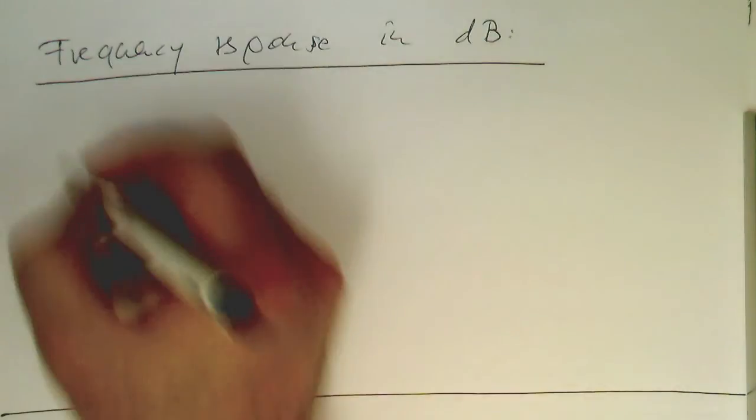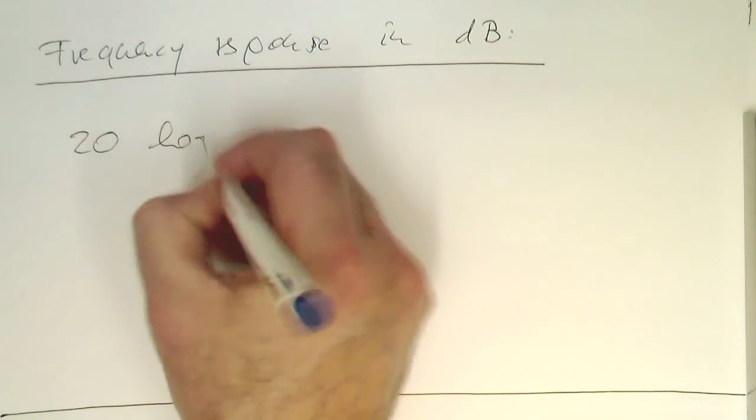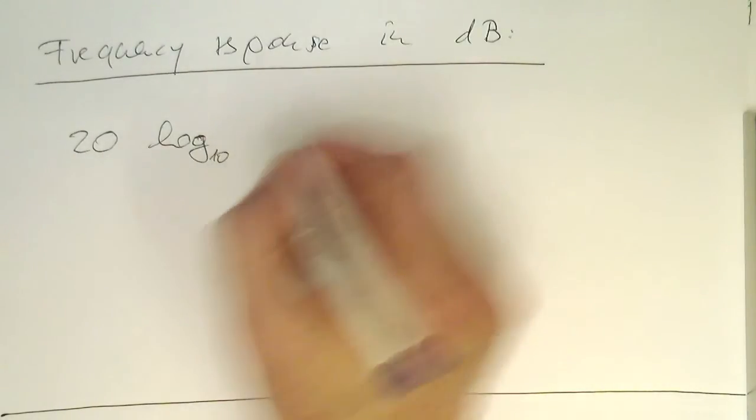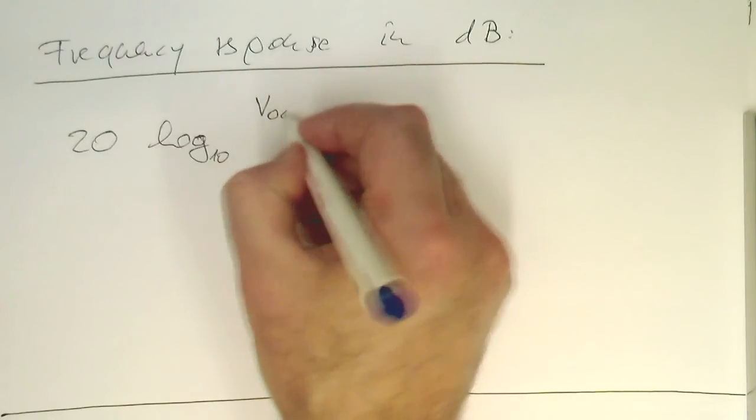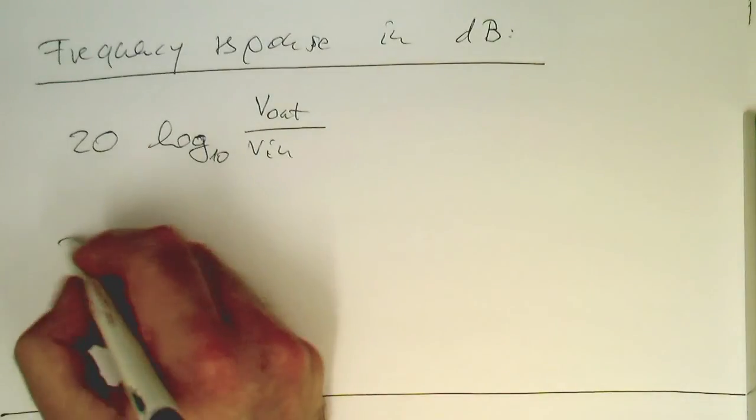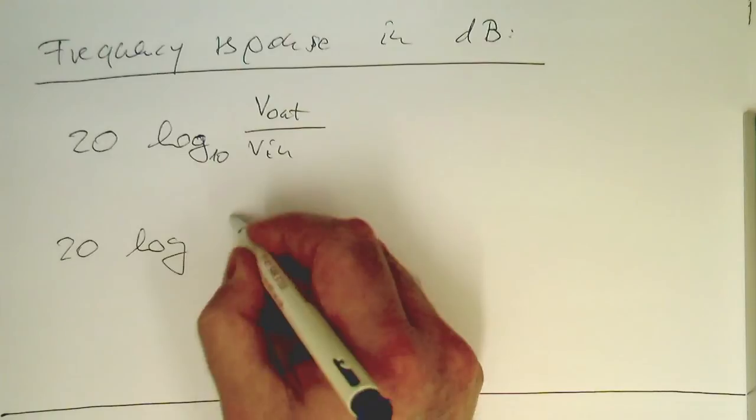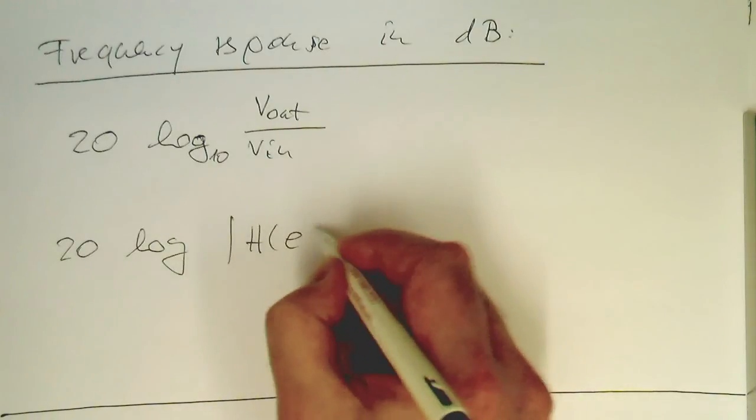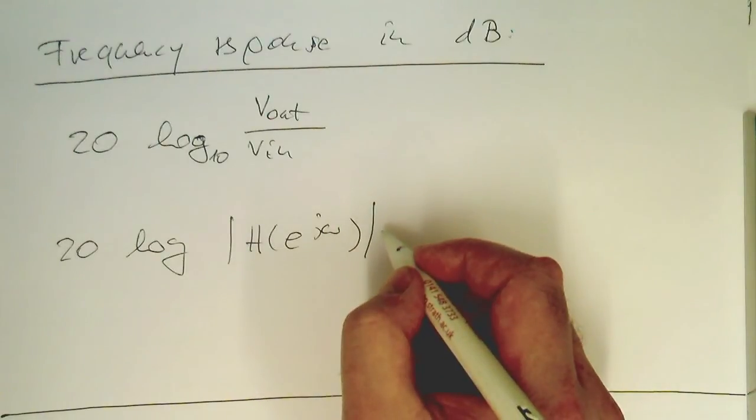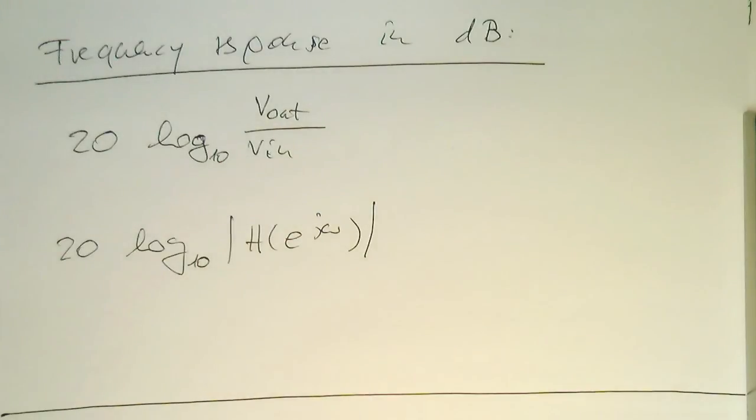The frequency response in decibel would be usually plotted as 20 log to the base of 10, and then V out divided by V in. In this case here, it would be 20 log 10 and then the absolute value of H(2jω) for the different frequencies here. Let's do that.